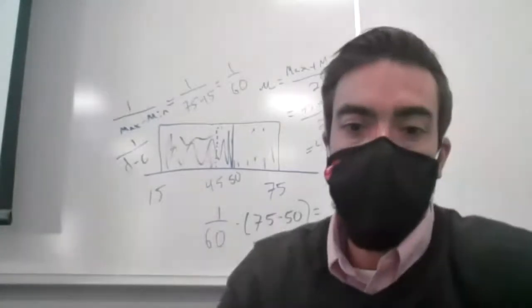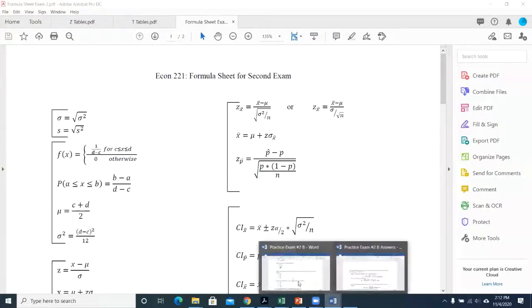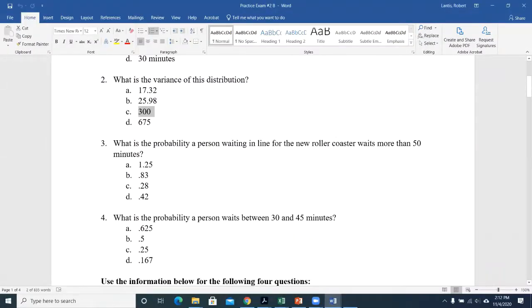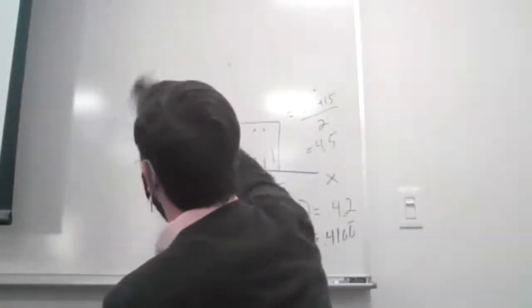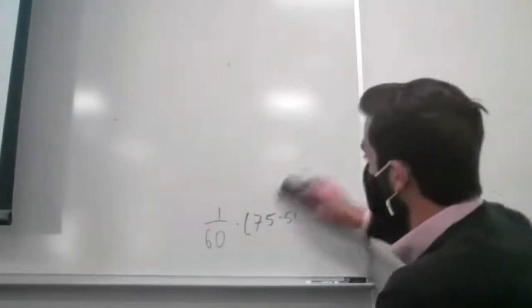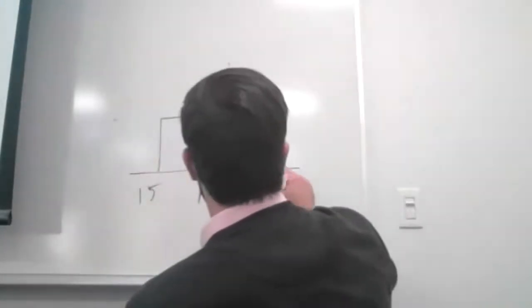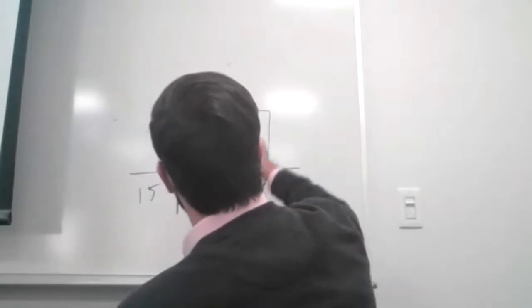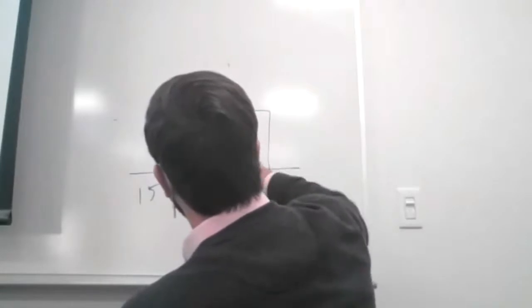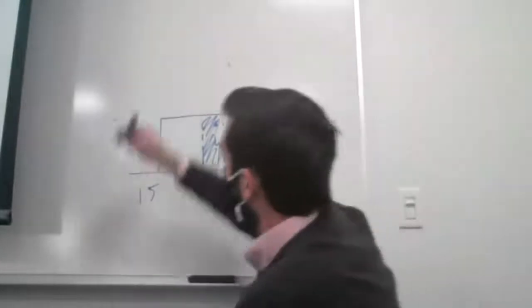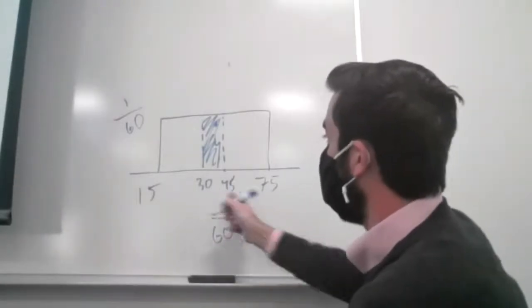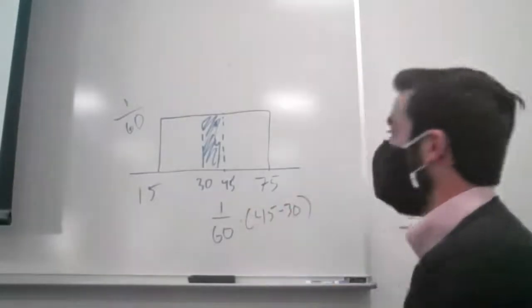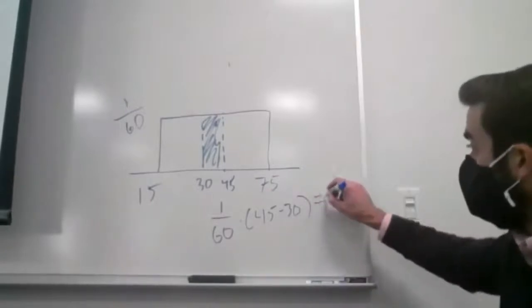What's the probability that somebody waits between 30 and 45 minutes? The height of my distribution is still 1 over 60. I take the height, 1 over 60, and multiply by the length of my interval, 45 minus 30. That gives me 15 over 60, which is 0.25.